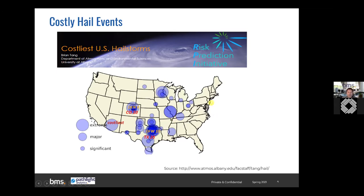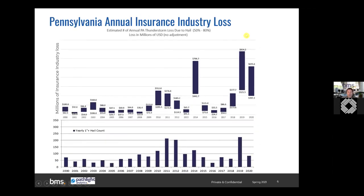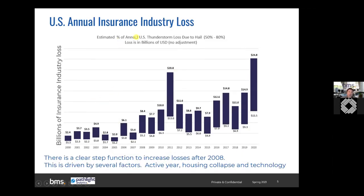There are no large hail loss events listed across the East Coast or Florida, but that's not to say they don't occur across the Northeast and mid-Atlantic. When we look at the annual insurance industry loss from hail, generally it's about 50 to 80 percent of the insured loss on any given event. Looking at property claim services data for severe weather and hail events, there is a clear upward trend and significant variability. There's a notable step function increase in losses since 2008.